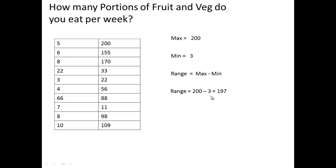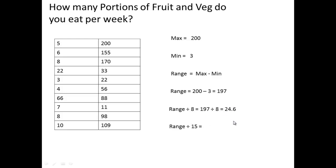For this course we've decided we want between 8 and 15 class intervals. So what we do is take the range, which is 197, and divide it by 8 — that gives us 24. Then we take the range and divide it by 15 — that gives us 13. We then look for a nice round number between 24 and 13.